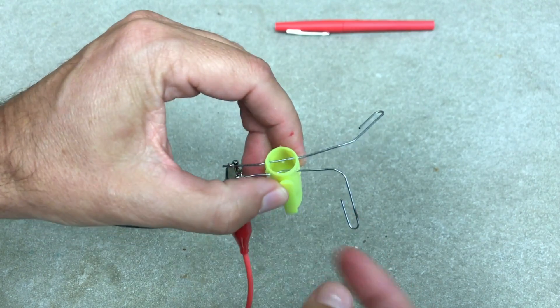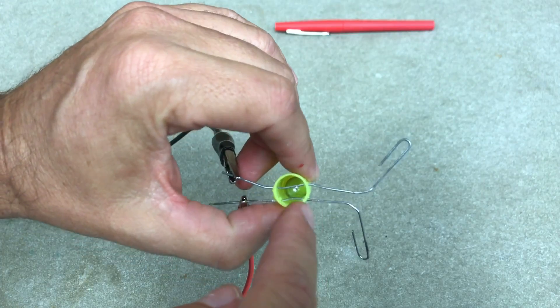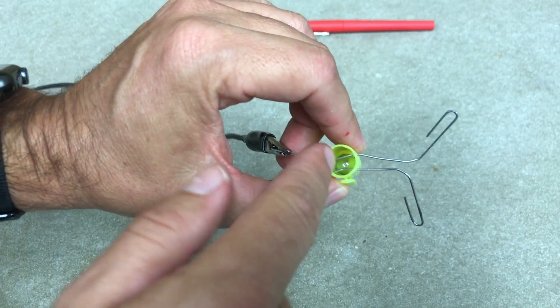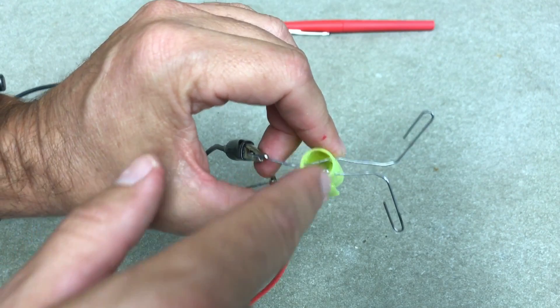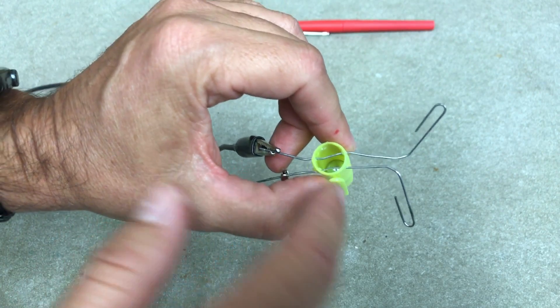And then I put a ball bearing in there. So when that ball bearing rolls forward and touches these two paper clips it will complete the circuit and turn something on.